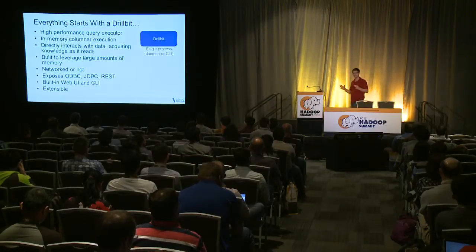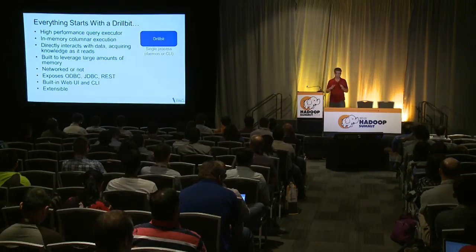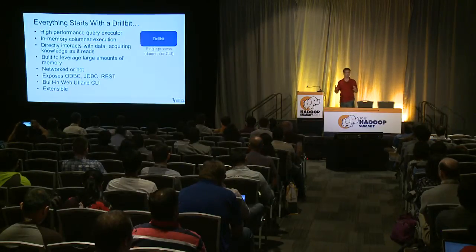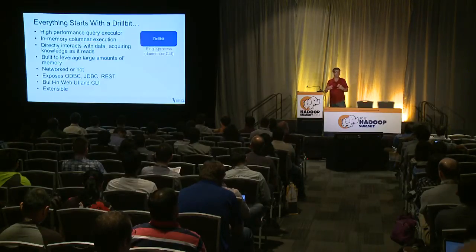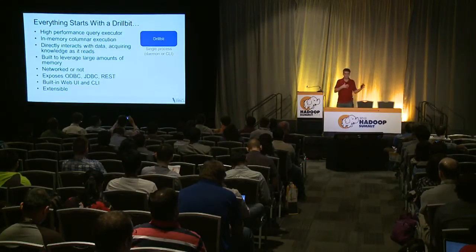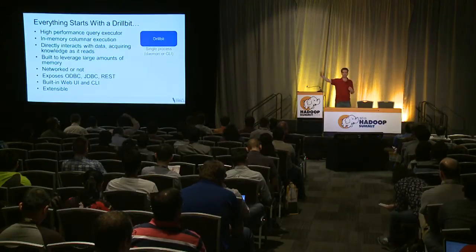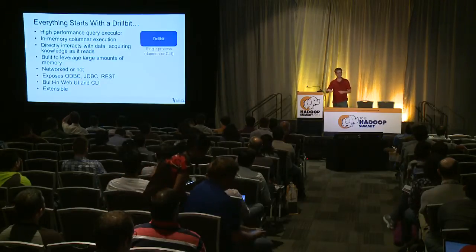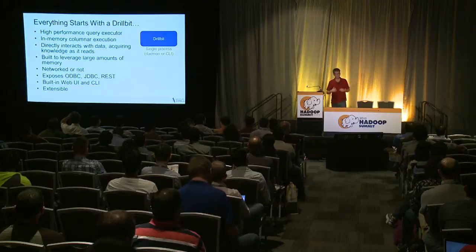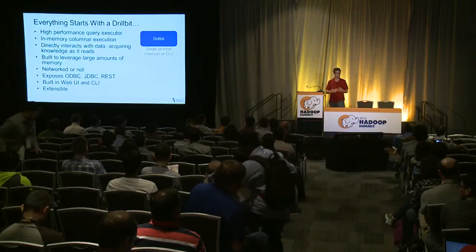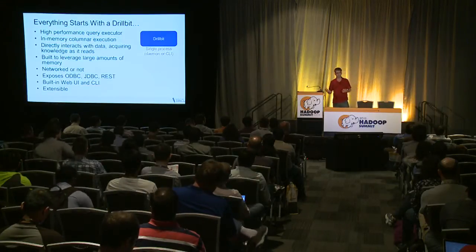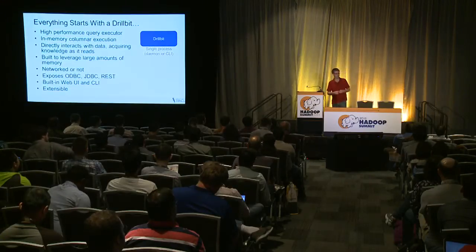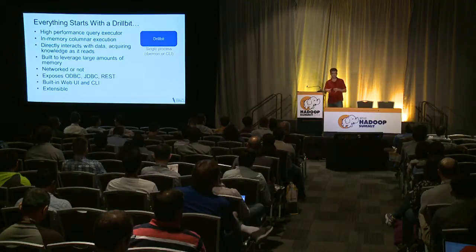How does it work? It starts with the drill bit — a daemon process that does query execution. It has a powerful capability called in-memory columnar execution. It's the first engine that fully subscribes to this new model; other tools have started to toy with it but we're the first to say the whole system needs to work columnar in-memory. It directly interacts with data, reads the query, and on the fly discovers the schema as it reads data — all without any setup ahead of time. We frequently test on large clusters using 200 gigabytes of memory per node, because for really large datasets and low-latency interactive experience, you need that memory.